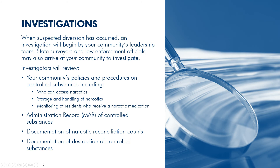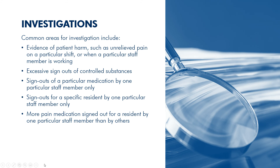When suspected diversion has occurred, an investigation will begin by your community's leadership team. State surveyors and law enforcement officials may also arrive at your community to investigate. They'll be looking for your community's policies and procedures on controlled substances, including who has access to narcotics, the storage and handling policies for narcotics, and any monitoring or documentation of residents who receive a narcotic medication. They'll review the administration record of controlled substances, documentation of the change of narcotic counts, and documentation of destruction of controlled substances. Common areas for investigation include evidence of patient harm, such as unrelieved pain on a particular shift or when a particular staff member is working, excessive sign-outs of controlled substances, sign-outs of a particular medication by one staff member only, sign-outs for a specific resident by one staff member only, or more pain medication signed out for a resident by one particular staff member compared to others.